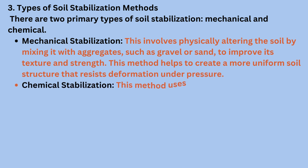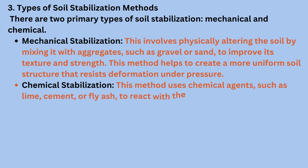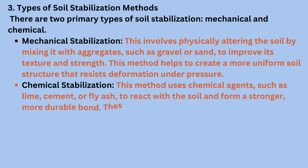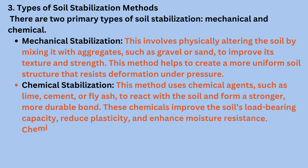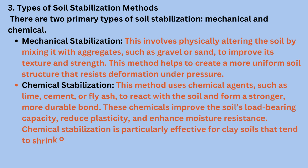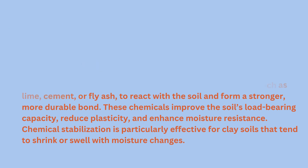Chemical stabilization uses chemical agents, such as lime, cement, or fly ash, to react with the soil and form a stronger, more durable bond. These chemicals improve the soil's load-bearing capacity, reduce plasticity, and enhance moisture resistance. Chemical stabilization is particularly effective for clay soils that tend to shrink or swell with moisture changes.